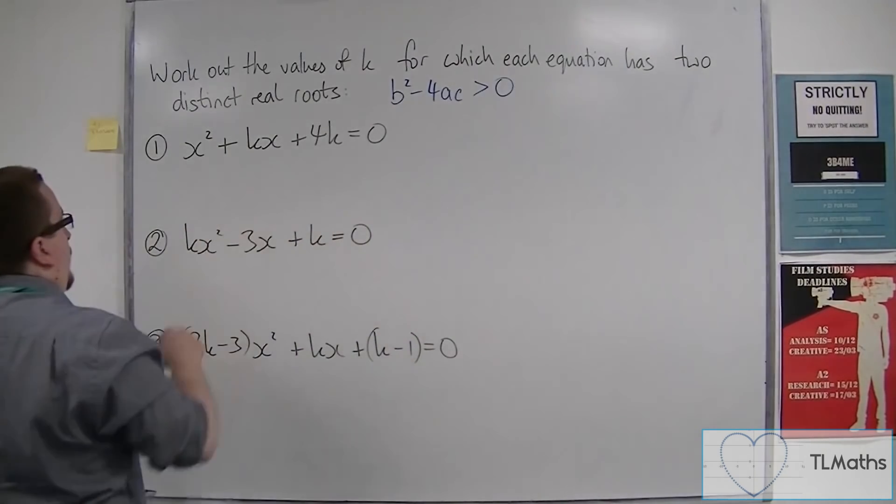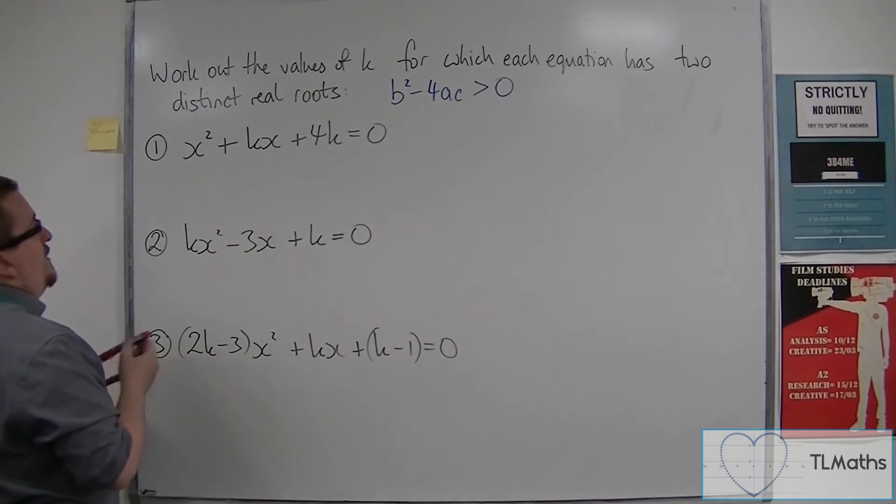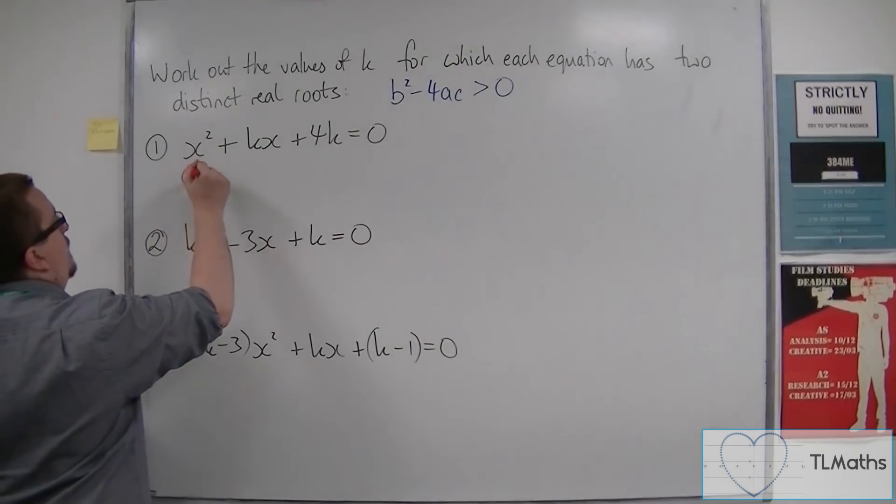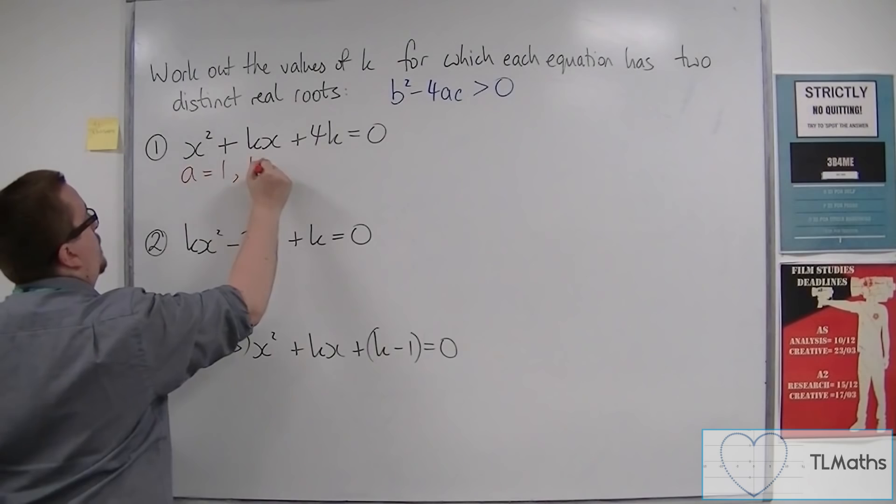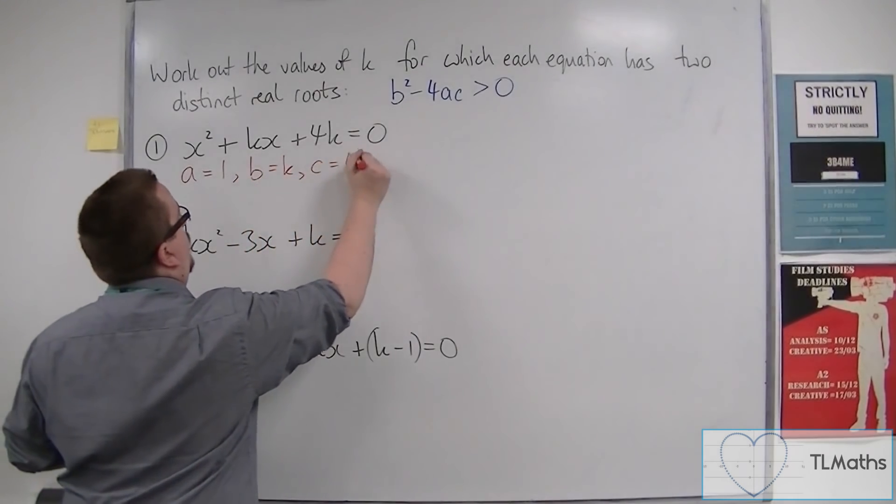So let's look at this first one. So first of all, identify the value of a, b and c. So a will be 1, b will be k and c will be 4k.